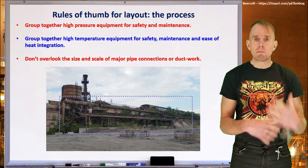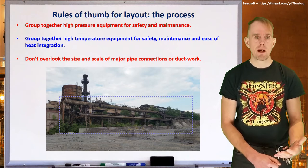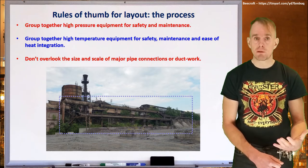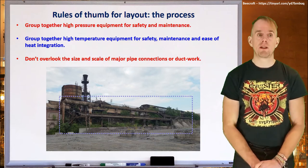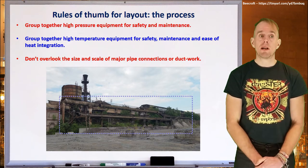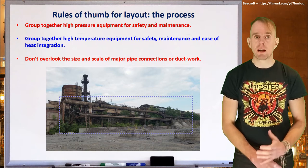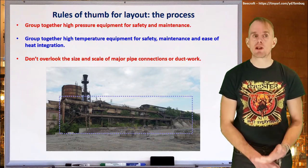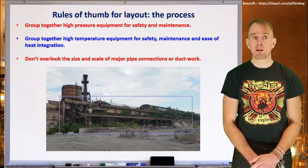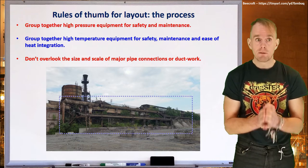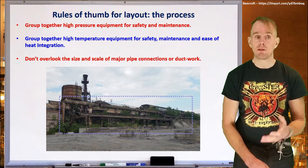There will be pipework and ductwork connecting items of equipment together, and don't forget this can come in a variety of different sizes — from incredibly small, a few inches in diameter, through to the very, very big. The photograph of the steelworks on the board reminds you how big pipework can be. The dotted box shows large duct and pipework conveying carbon monoxide-rich gas into the steel-making process — these pipes are vast and require specific parts of site for them to run. If you assume these pipes are small, you'll end up with a layout that simply isn't realistic.